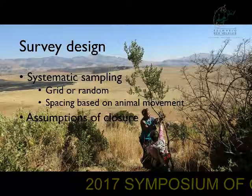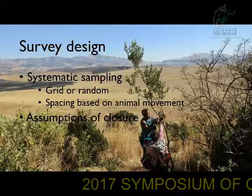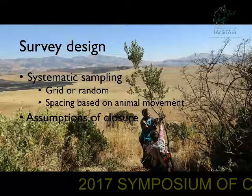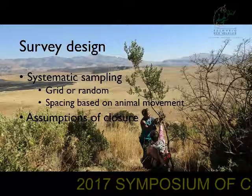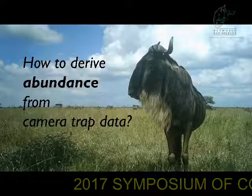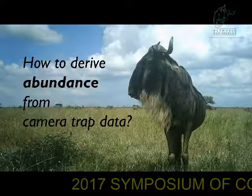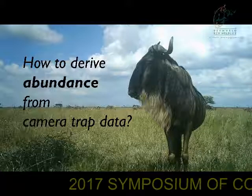You'll also need to consider assumptions of closure, particularly geographic closure. If you're camera trapping across an entire fenced reserve, that assumption holds — you don't have immigration into your system. If you're only sampling parts of a system, you're going to have to account in some way for these movement processes. So how then can you take this count data from your camera trapping survey and turn that into an estimate of abundance?